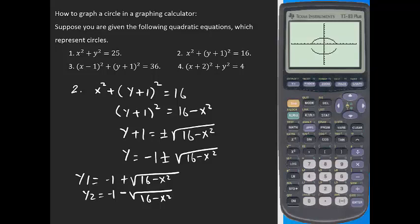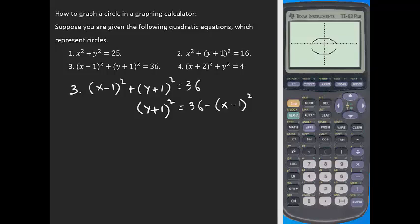Now for examples 3 and 4. For example 3, when you have (x minus 1) squared terms together, do not expand them — leave them as is. You can find y plus 1 equals plus or minus the square root of 36 minus (x minus 1) squared. In this case the center will be at (1, negative 1) and the radius is 6.